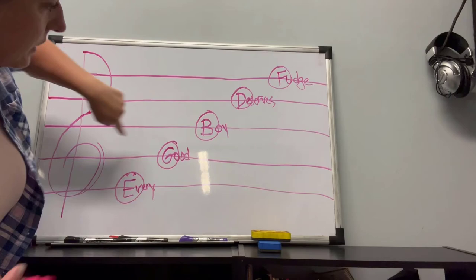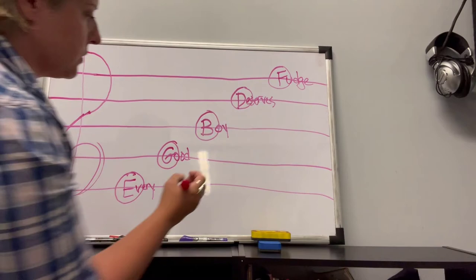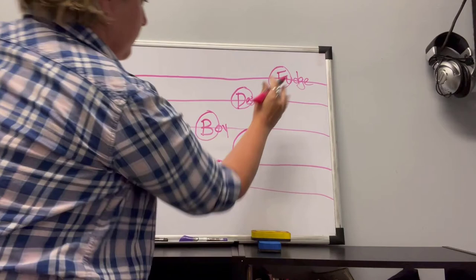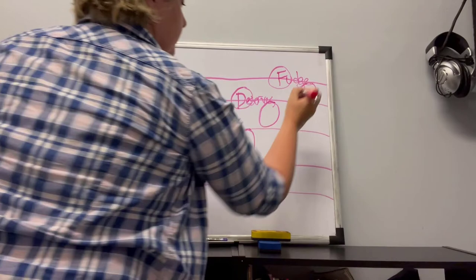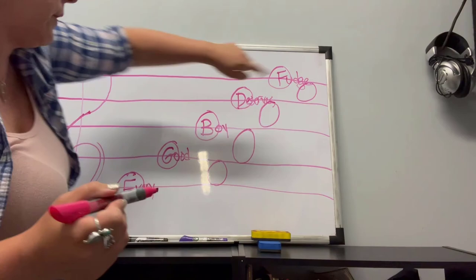Those are the line notes. Now for the space notes, same thing. I should have shifted these over a little bit, oh well. So now we have a note on each space, so it's just four, right? We had five lines, four spaces. I used whole notes again.